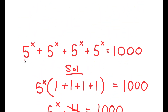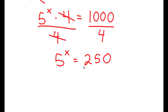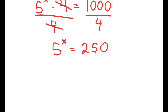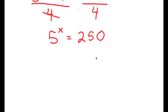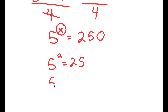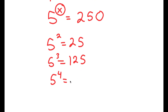So from this large equation, we got down to a significantly smaller one: 5 to the power of x equals 250. Just at first glance, we can tell that x is not going to be a whole number, because 5 squared is 25, 5 to the power of 3 is 125, and 5 to the power of 4 is 625.